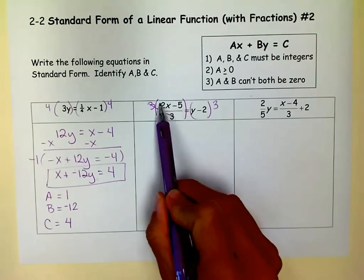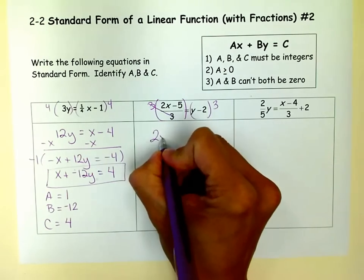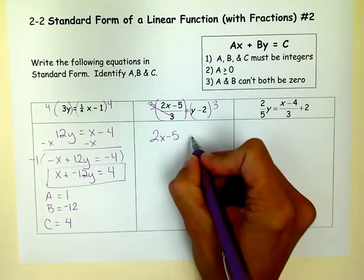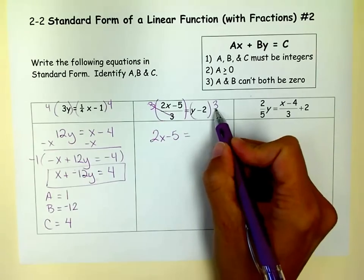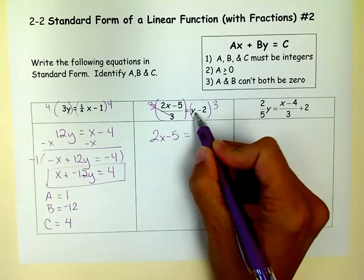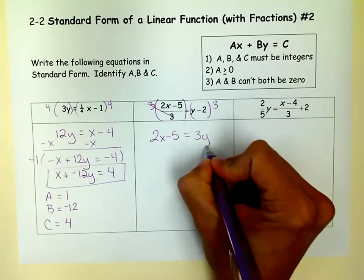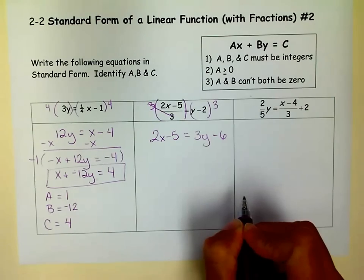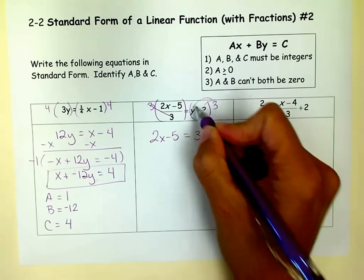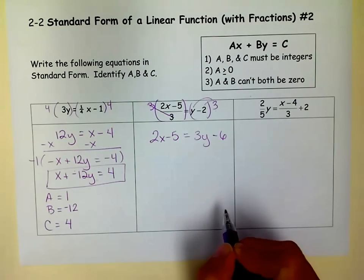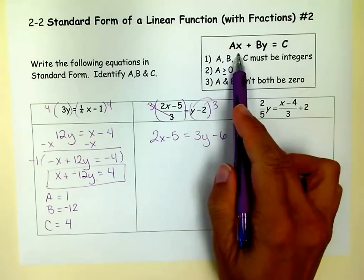And then you have 1 times this. And 1 times 2x minus 5 is 2x minus 5. And then we can use our distributive property here to distribute that 3 into both of those. So we get 3y minus 6. So we multiply that 3 by both things. And so we realize to get rid of our fractions. So check number 1.